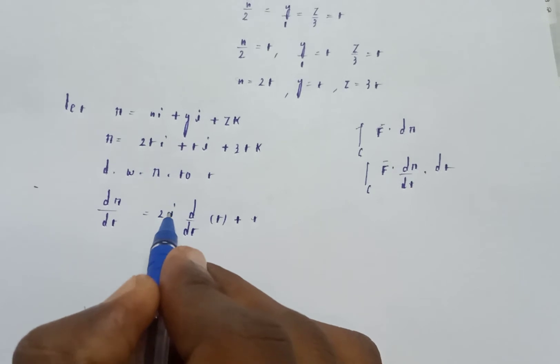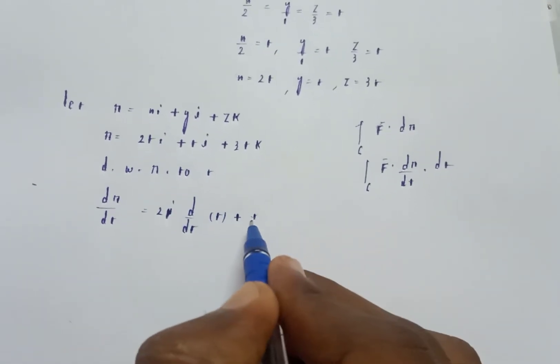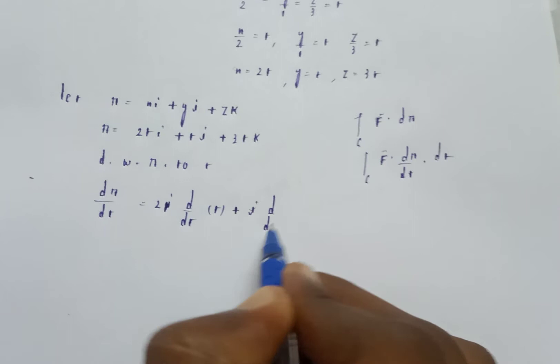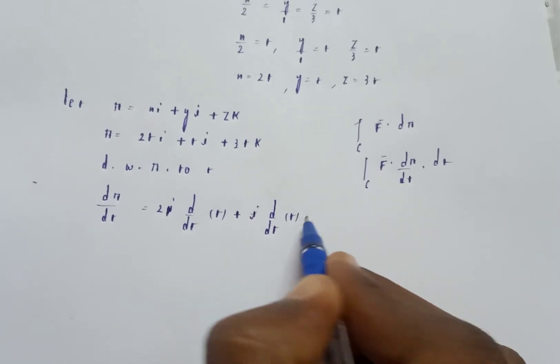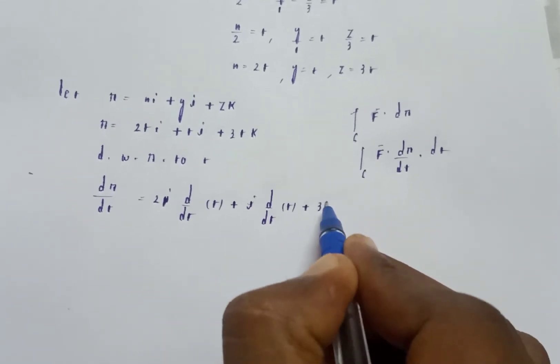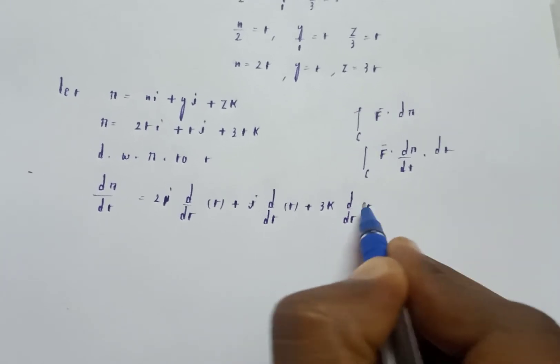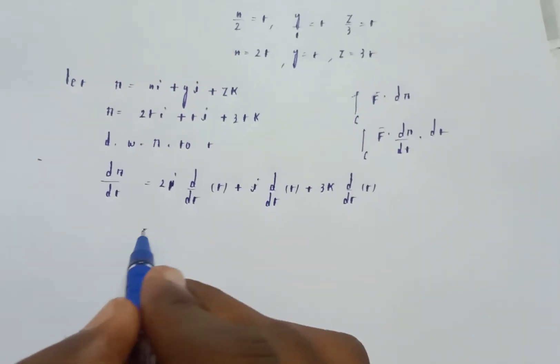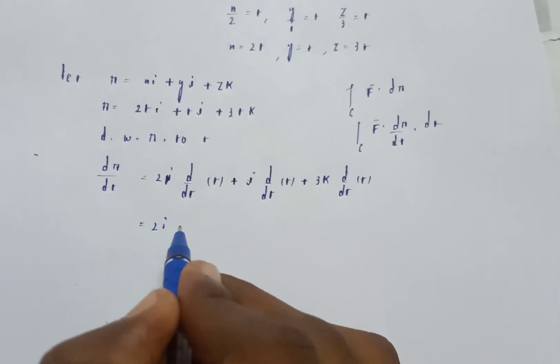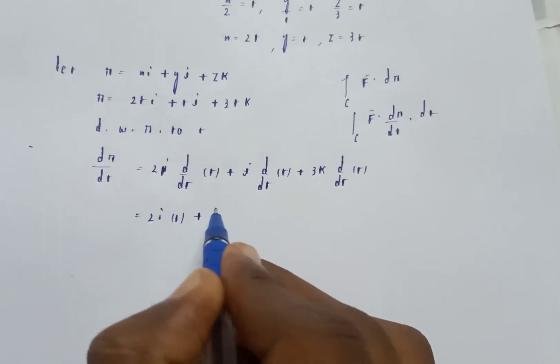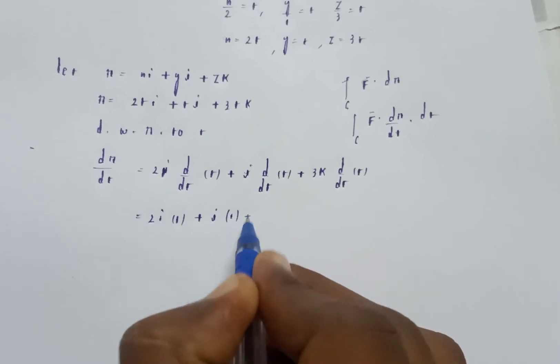So dr by dt equals d by dt of (2ti plus tj plus 3tk). This gives 2i, d by dt of t is 1, plus j, d by dt of t is 1,